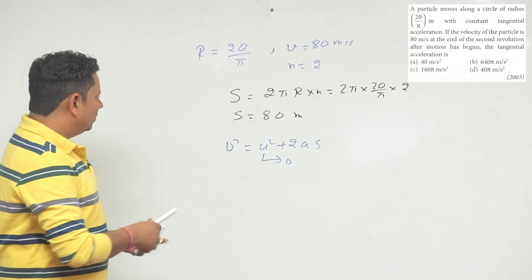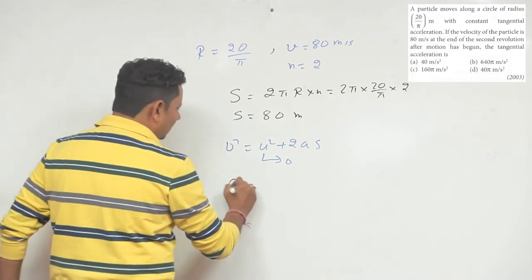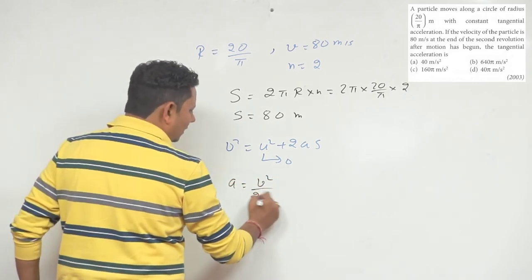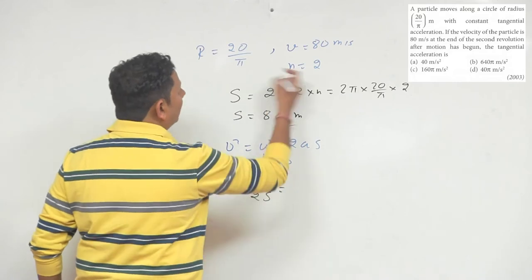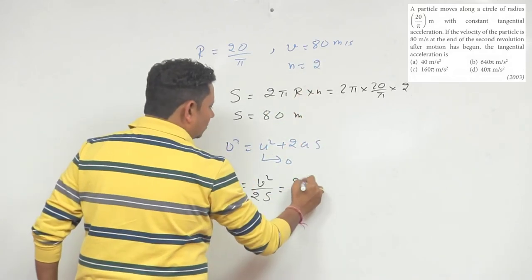In this case we can say the acceleration value will be equal to v² divided by 2s. The value of v is given to us, so it will be 80 multiplied by 80 divided by 2 multiplied by s.